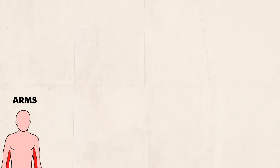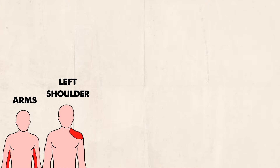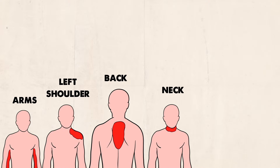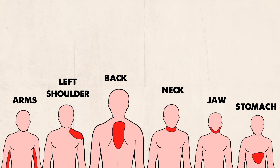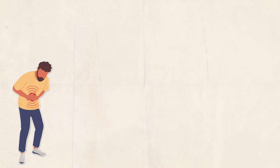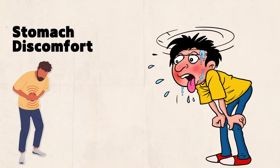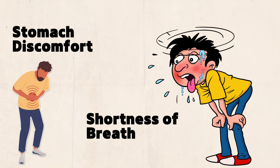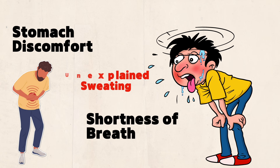You may experience upper body pain or discomfort including arms, left shoulder, back, neck, jaw or stomach. Your heart may beat faster or irregularly. You may have stomach discomfort that feels like indigestion, shortness of breath which may leave you feeling like you can't get enough air even when resting, and unexplained sweating. It is important to note that your symptoms may not fit this textbook description, so trust your instincts if you think something is wrong.